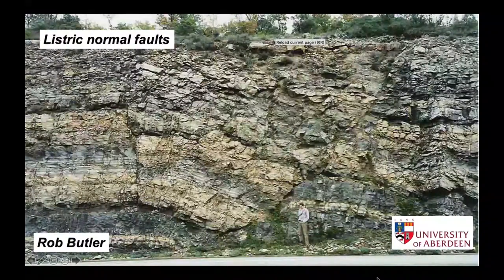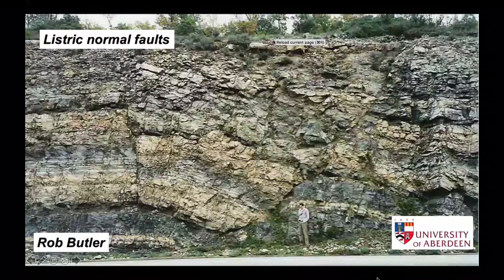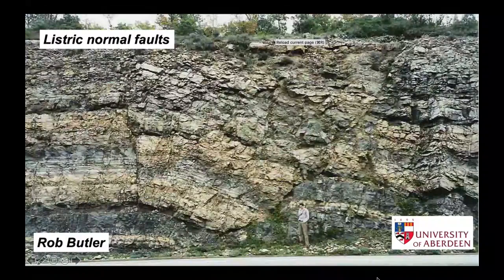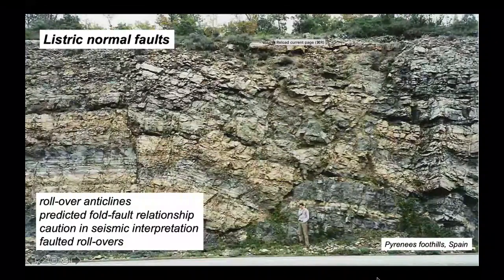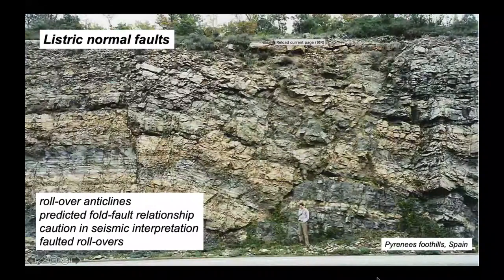Normal faults come in different shapes and sizes. In this presentation we'll look at a particular shape of normal faults termed listric. We'll look at the deformation in the hanging wall to these types of normal faults and the creation of features called rollover anticlines.